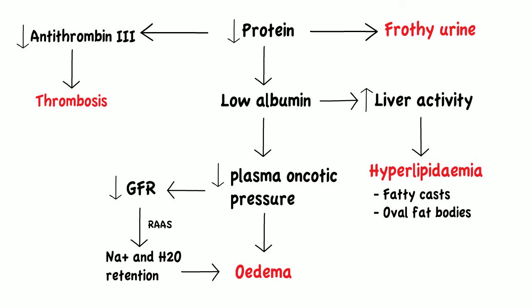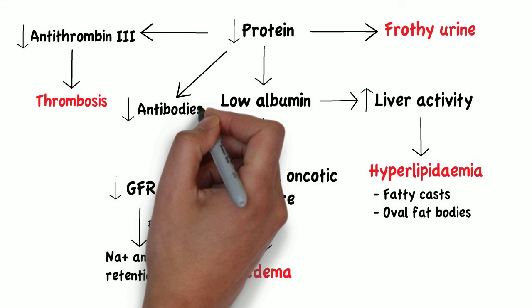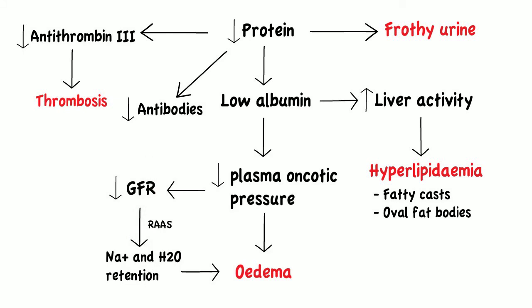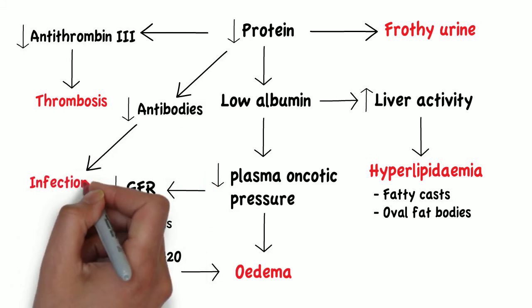Lastly, other proteins lost in the urine are immunoglobulins, also known as antibodies, and this will make patients more prone to infection.